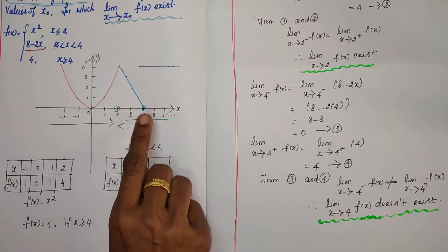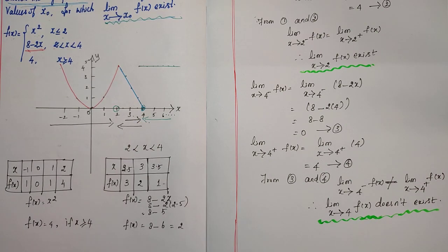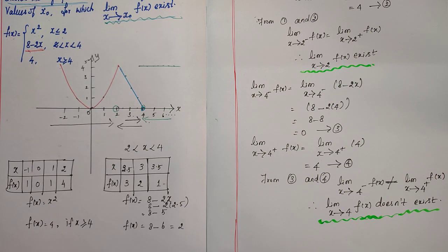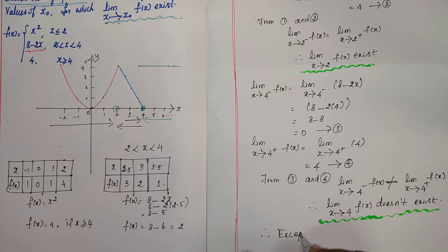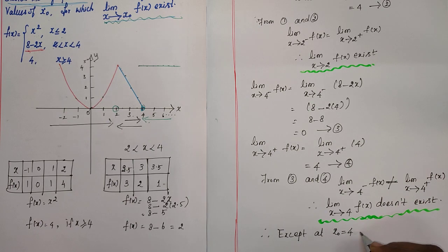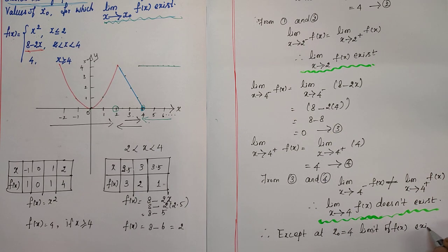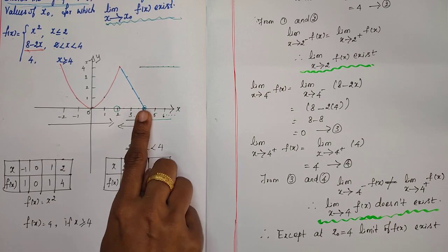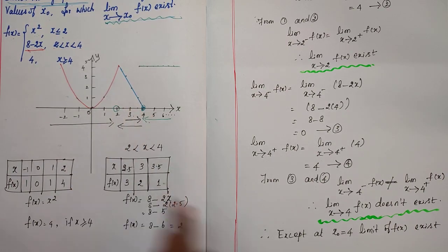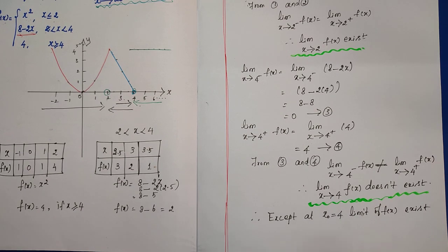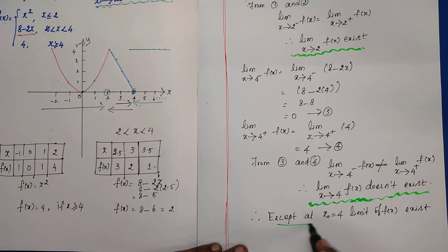Conclusion: At x = 4 the limit does not exist. For all remaining points, the limit as x tends to those values exists. Thank you.